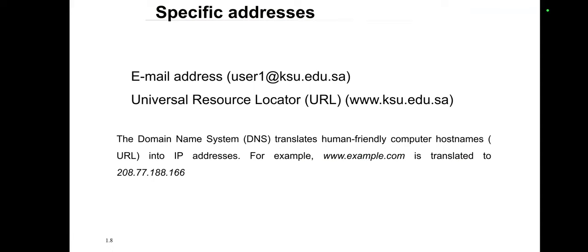The last address is the specific address. You can consider it as an email address or a URL. When we write mail to anyone, we have to mention that email address, and that is called a specific address. When we request a particular website, we enter the website name, which is called the Universal Resource Locator. The Domain Name System translates that human-friendly computer host name, the URL, into an IP address. For example, if we type www.example.com, that request gets translated into an IP address.